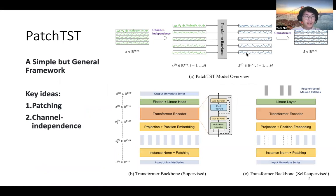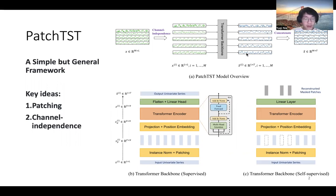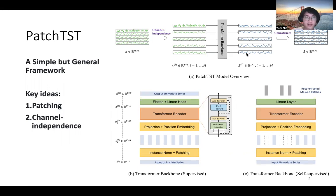Our model PatchTST is actually a simple but general framework that can be applied to any kind of transformer-based models. For example, it can be used on Autoformer, Informer, FEDformer, and so on. But here, we are just using a vanilla transformer encoder to prove its effectiveness. The key points are very simple: patching and channel independence.